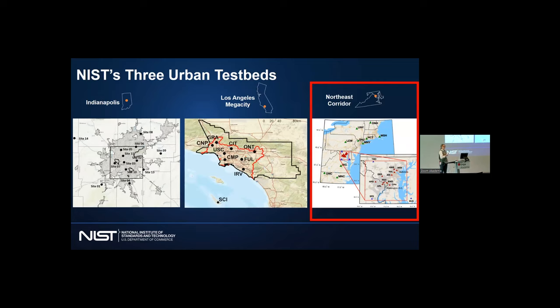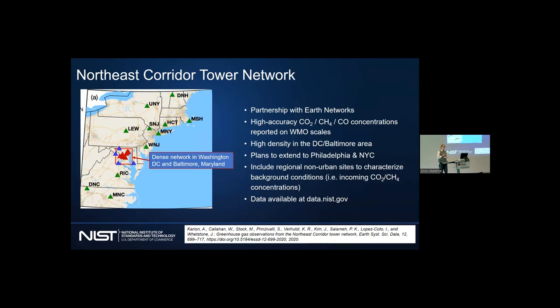Here's some maps of these different urban testbed systems. I'm going to be focusing on the Northeast. It's a regional testbed focused on that little red square where we have a really dense network of in-situ towers, including towers that are within the city, shown in red triangles, and background towers. We're not operating these towers for the most part. We're in partnership with a private company called Earth Networks.